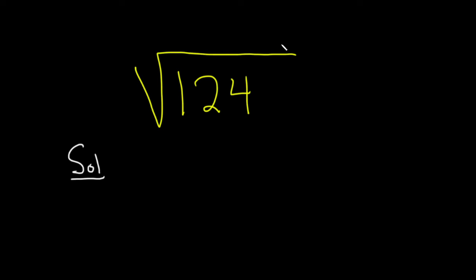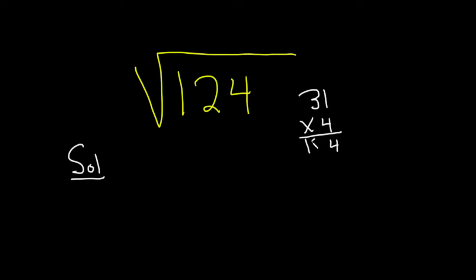Well there's a really simple computation you can do that will help you: 31 times 4. Look at this — 4 times 1 is 4, and 4 times 3 is 12. So once you know this, then you can do this problem.